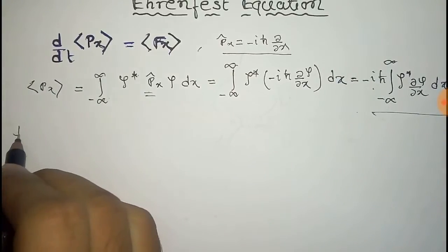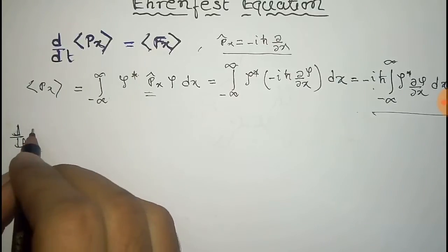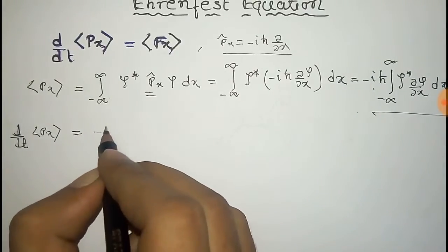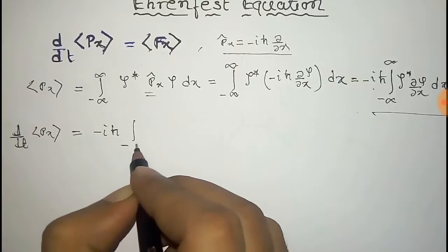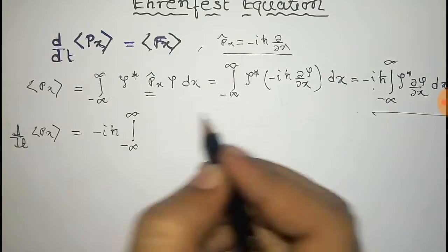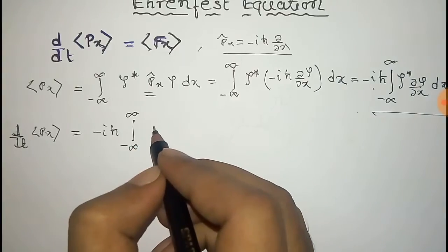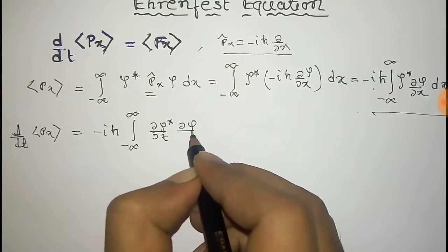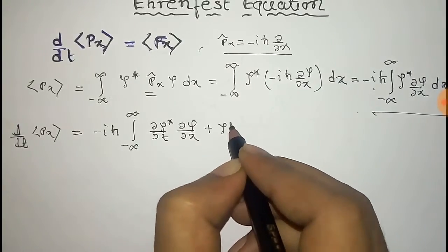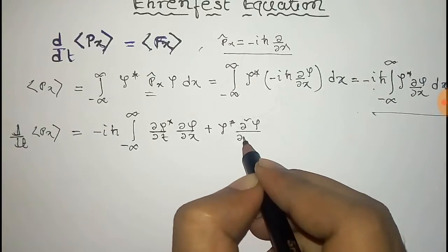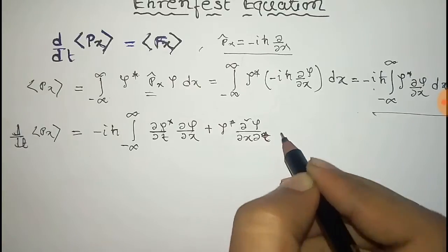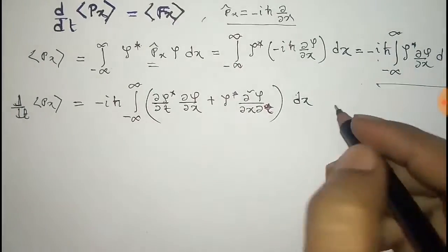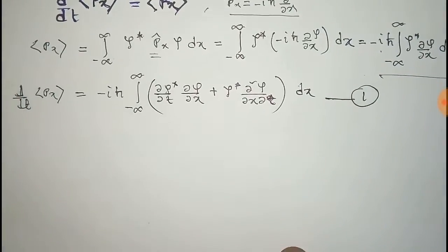Now we differentiate with respect to time, so d/dt of the expectation value of p_x equals the time derivative of that integral. After differentiating under the integral sign we get (∂ψ*/∂t)(∂ψ/∂x) plus ψ*(∂²ψ/∂x∂t), all integrated over dx. We name this Equation 1.